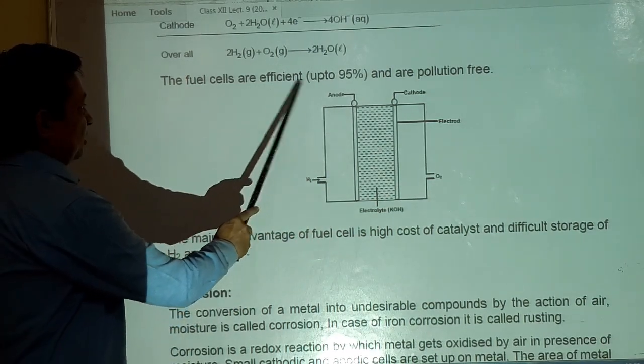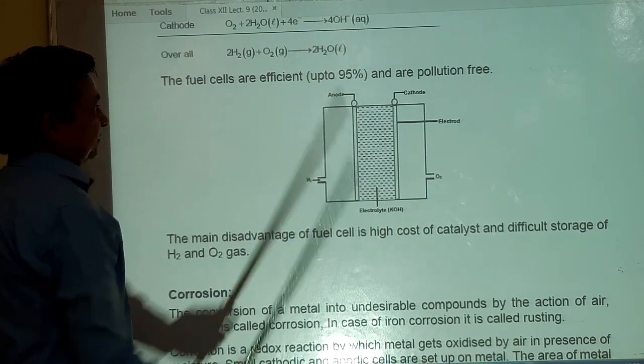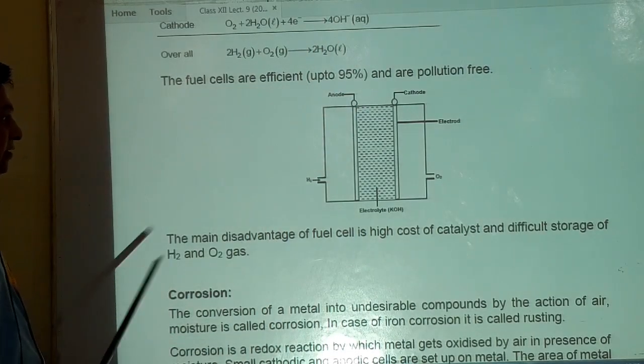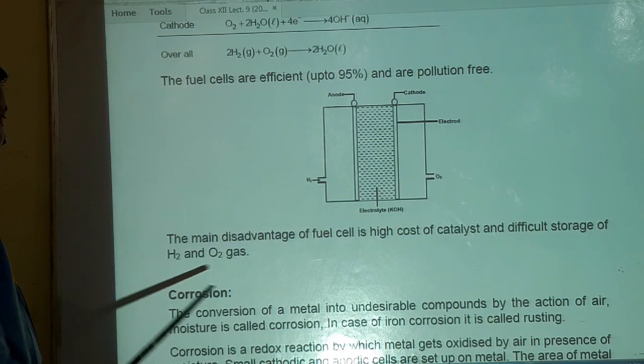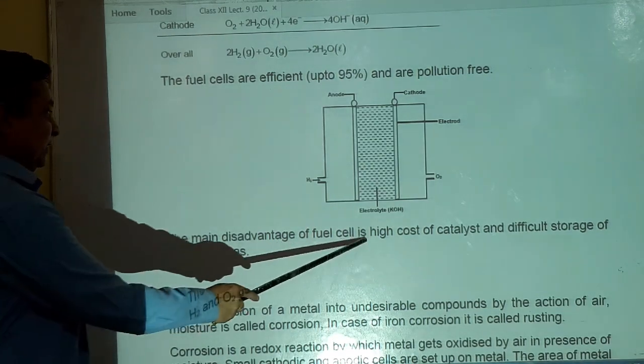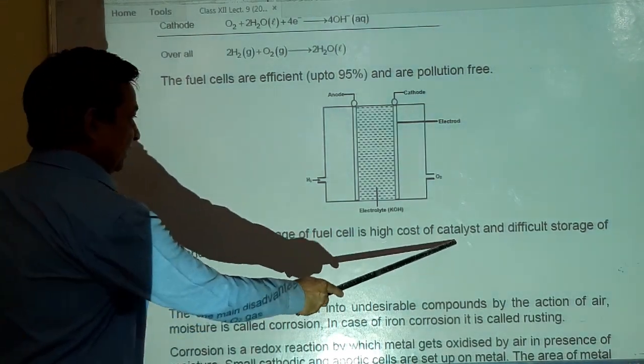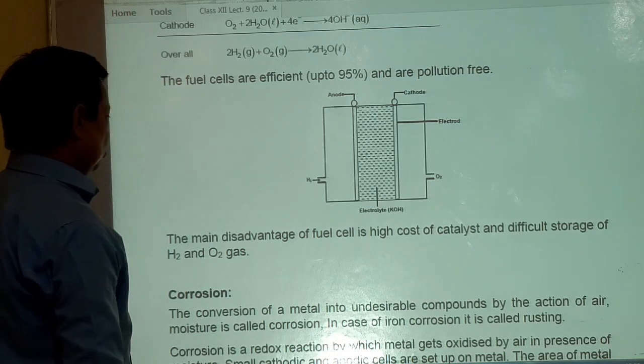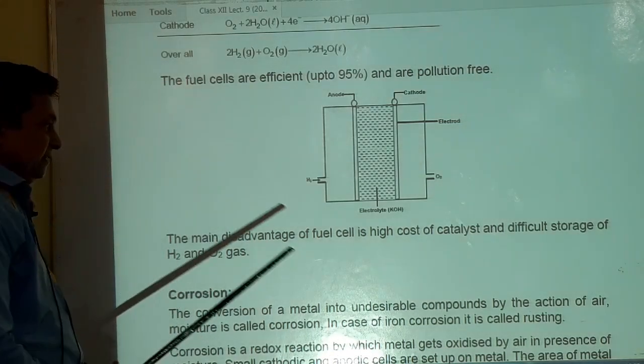The fuel cells are efficient up to 95 percent and are pollution free. यह इसका advantage है. The main disadvantage of fuel cell is high cost of catalyst and difficult storage of H2 and O2 gas.